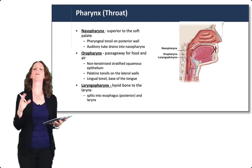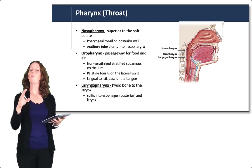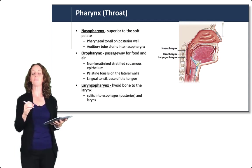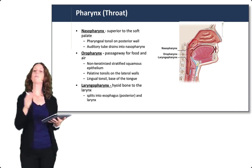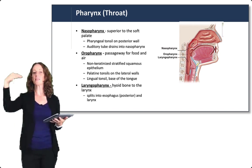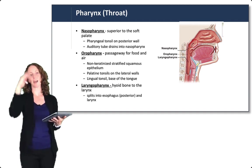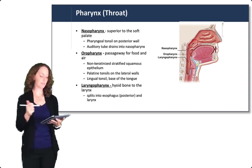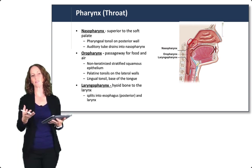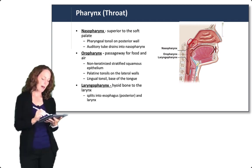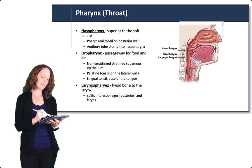Moving past the nasal cavity, we enter the pharynx or throat. There are three regions: the nasopharynx just behind the nasal cavity, the oropharynx just behind the mouth, and the laryngopharynx just above the larynx. The uvula is the portion of the soft palate that closes off the nasal cavity during swallowing. Within the nasopharynx is the pharyngeal tonsil on the posterior wall and the opening to the auditory tube, also known as the eustachian tube. The oropharynx contains the palatine tonsils and the lingual tonsil at the base of the tongue.